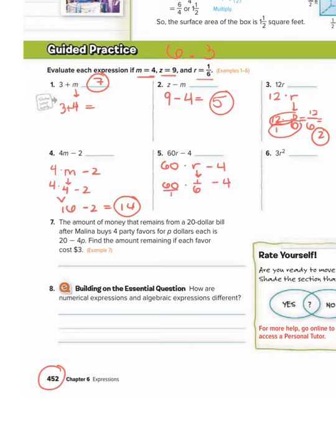60 over 1, I mean 60 times 1 is 60. 1 times 6 is 6. 60 over 6 is 10. That means 60 divided by 6. Then bring down this minus 4. 10 minus 4 is 6.